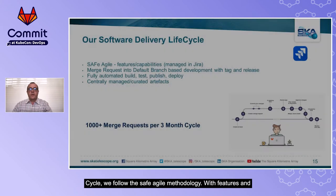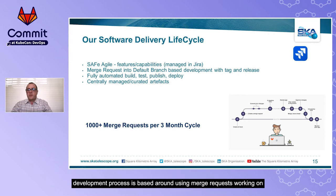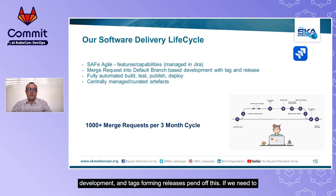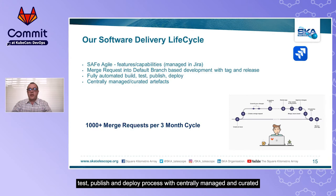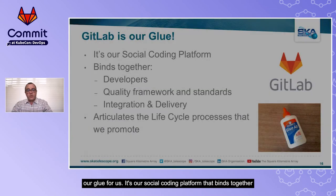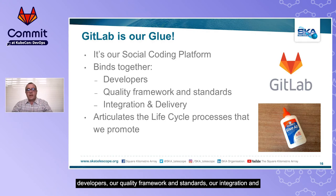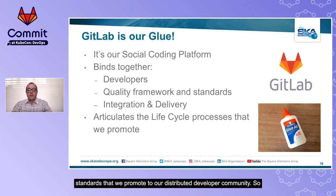For our software development lifecycle, we follow the SAFe Agile methodology with features and capabilities defining our units of work, managed through Jira. The development process is based around using merge requests and working on feature branches, where the default branch is always the tip of development and tags forming releases are pinned off this. If we need to patch production, we create release branches on demand. We have a fully automated build, test, publish and deploy process with centrally managed and curated artifacts housed in Nexus. GitLab is our glue — our social coding platform — binding together developers, our quality framework and standards, our integration and delivery, and articulating the lifecycle processes and standards we promote to our distributed developer community.